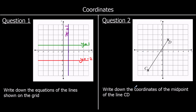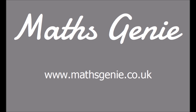The second question: write down the coordinates of the midpoint of line CD. To get from C to D, we go along 4 and up 6. Half of along 4, up 6 is along 2 and up 3. So the midpoint is at negative 1, negative 1 — so x is negative 1 and y is negative 1. The coordinates of the midpoint are (negative 1, negative 1).